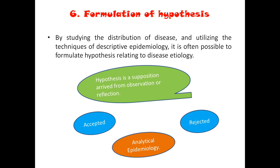Hypothesis formulation is the last step of descriptive epidemiology. Hypothesis is an assumption arrived from the observation of the collected data. Once you have collected data, you arrive at a formulation of hypothesis. So hypothesis is an assumption about the particular problem. For example, drinking water from that particular pipe or restaurant could be the cause of cholera. You cannot say it is the cause — you should say it could be the cause.